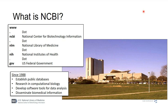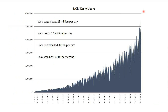NCBI has been around since 1988 with these broad goals that keep expanding and changing over time: establish public databases, do research in computational biology, develop software tools, and disseminate biomedical information. We are one of the busiest US government websites on the internet. This graph shows exponential growth of web traffic at NCBI over time, with peaks corresponding to vacation times in the US and Western Europe.